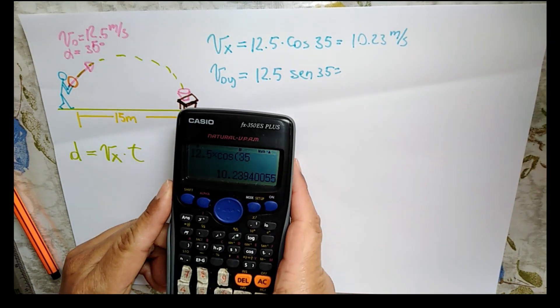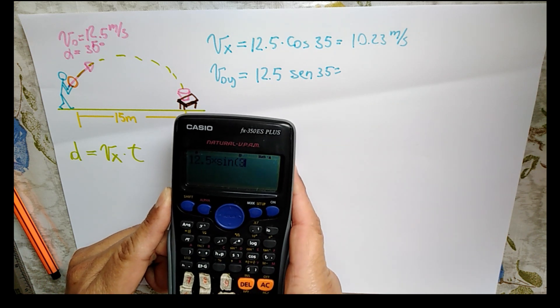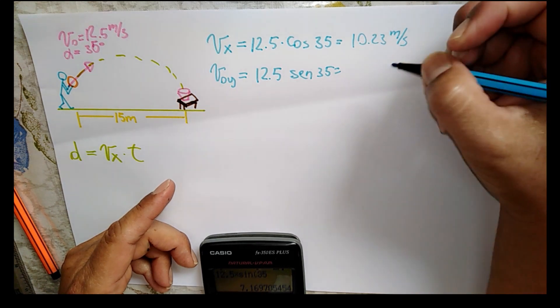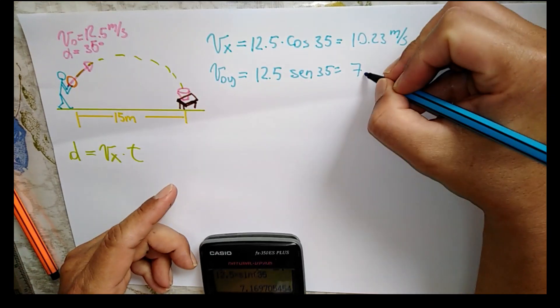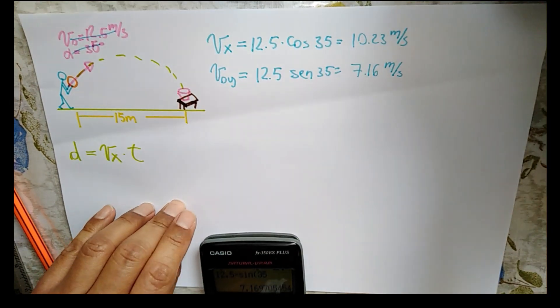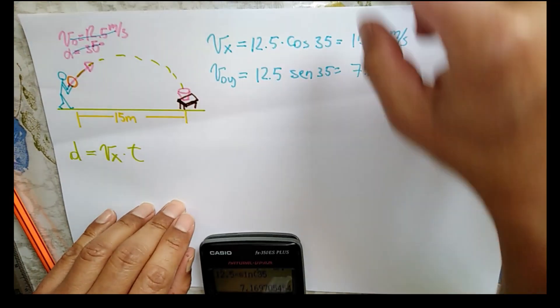Ahora, la componente de la velocidad inicial en Y va a ser igual también a la velocidad inicial por el seno de 35 grados. 12.5 por el seno de 35 nos da 7.16 metros por segundo. Ahora nos olvidamos de esa velocidad inicial. Ahora usamos nada más las componentes que tenemos acá.